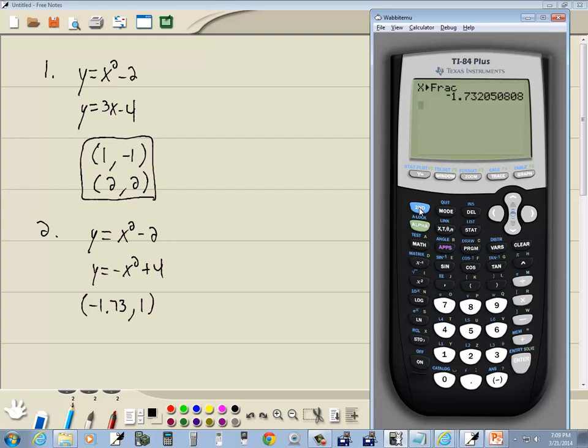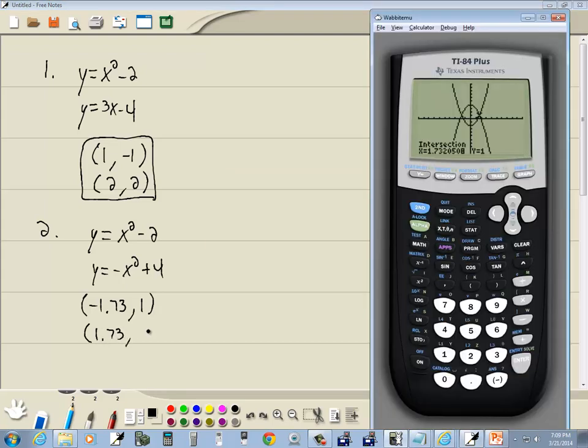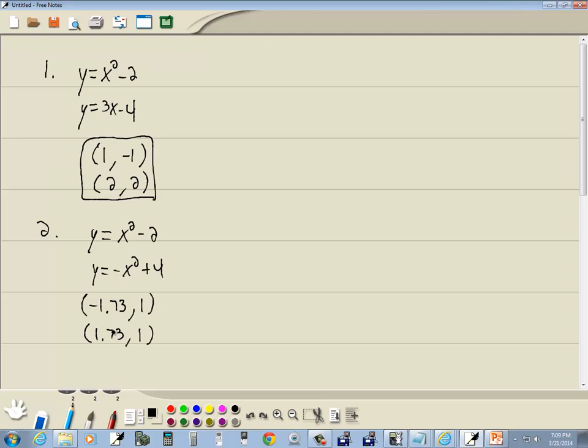We've got another answer. So I'll do second trace, choose intersect, enter on first curve, enter on second curve. And I'll do my right arrow key to move my flashing cursor over closer to this answer, where they intersect. So I'll buy right there. Press enter on it. And it looks like we get a positive version of the 1.73 comma, and then 1. Well, I don't need to try it. That's not going to change to a fraction. If the negative 1.73 won't, then the positive 1.73 won't. This is as good as it gets in terms of using the intersect method.